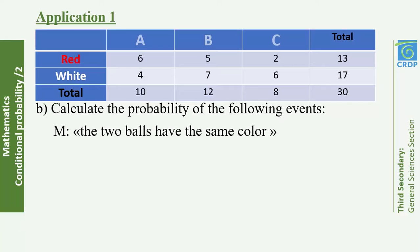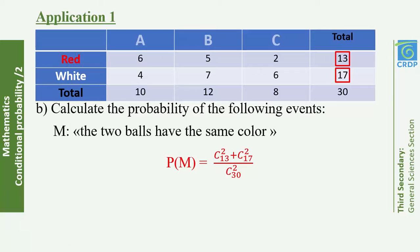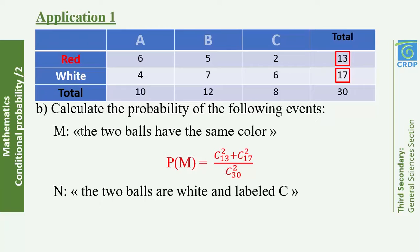Part B: Calculate the probability that the two balls have the same color. The favorable outcomes include choosing two red balls or two white balls — these are separate outcomes so we add them. For event N, the two balls are white and labeled C. There are 6 white balls labeled C, so the favorable outcomes are C(6, 2), divided by the total C(30, 2).